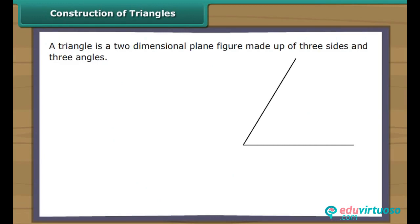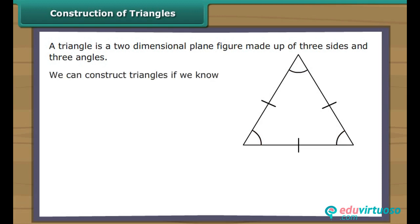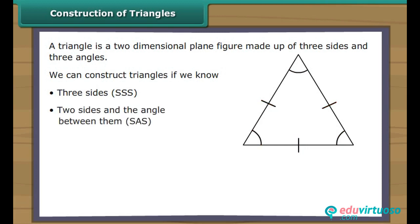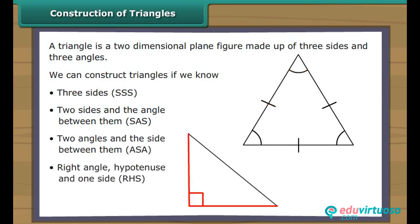Construction of Triangles: A triangle is a two-dimensional plane figure made up of three sides and three angles. We can construct triangles if we know three sides (SSS), two sides and the angle between them (SAS), two angles and the side between them (ASA), or right angle, hypotenuse and one side (RHS). Let us learn to construct all four types of triangles.